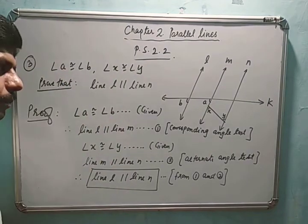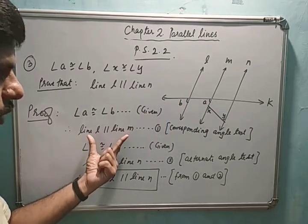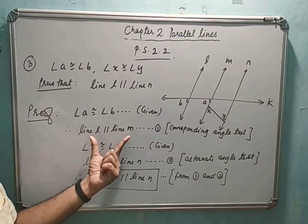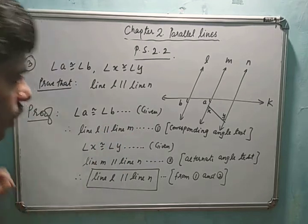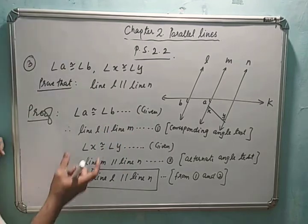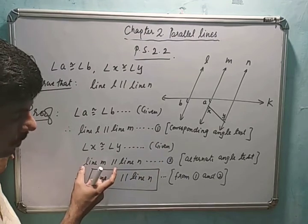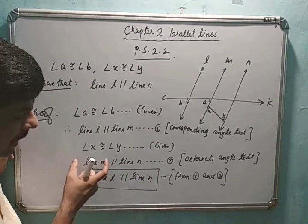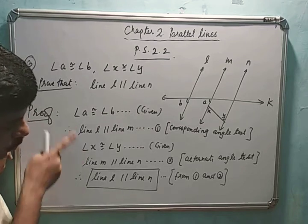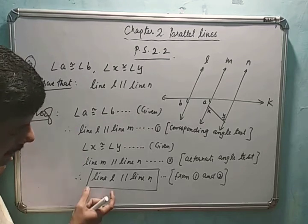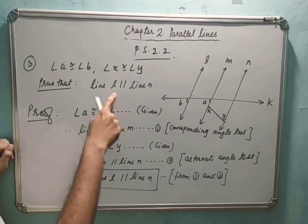Let's take a recap. A is congruent to b — this is given — so by the corresponding angle test, line l is parallel to line m. Then angle x is congruent to angle y — this is also given — so by the alternate angle test, line m is parallel to line n. By comparing statements 1 and 2, we can say that line l is parallel to line n, which is what was to be proved.